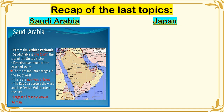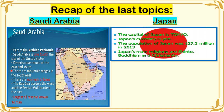The second one is Japan. The capital of Japan is Tokyo and its currency is Yen. The population of Japan was 127.3 million. Japan's main religions are Shinto, Buddhism, and Christianity.